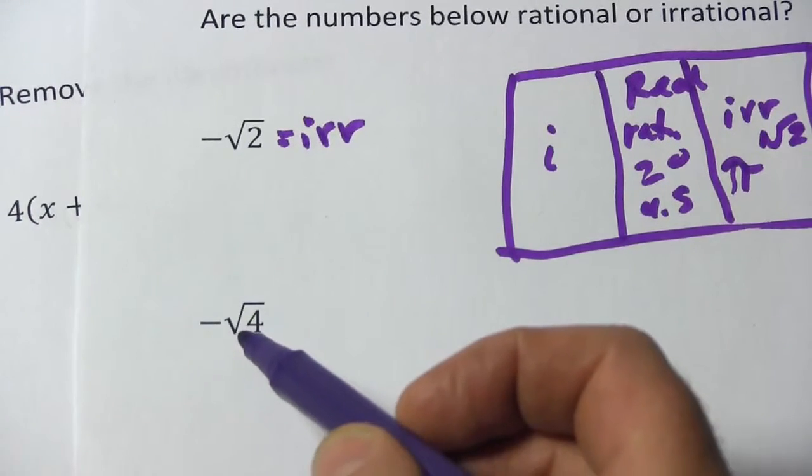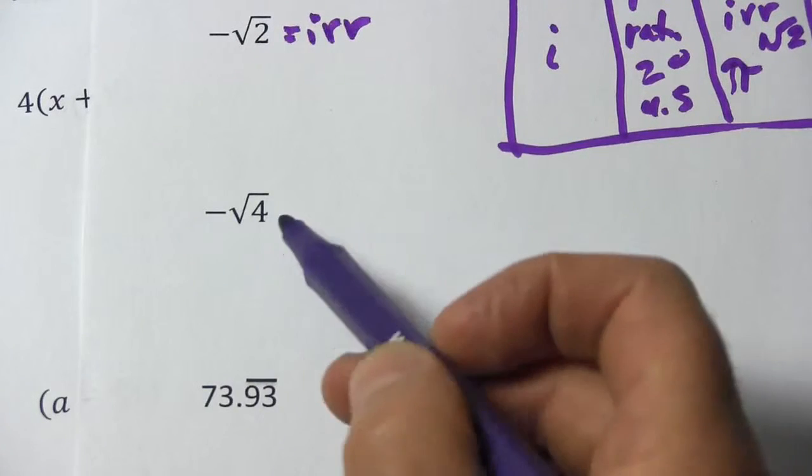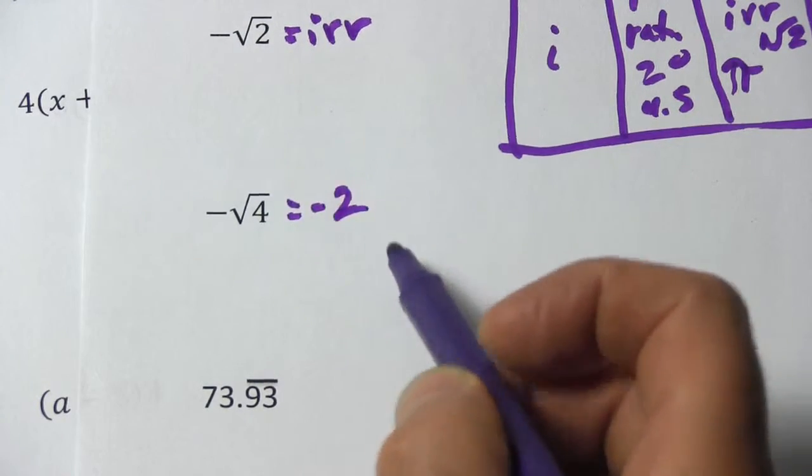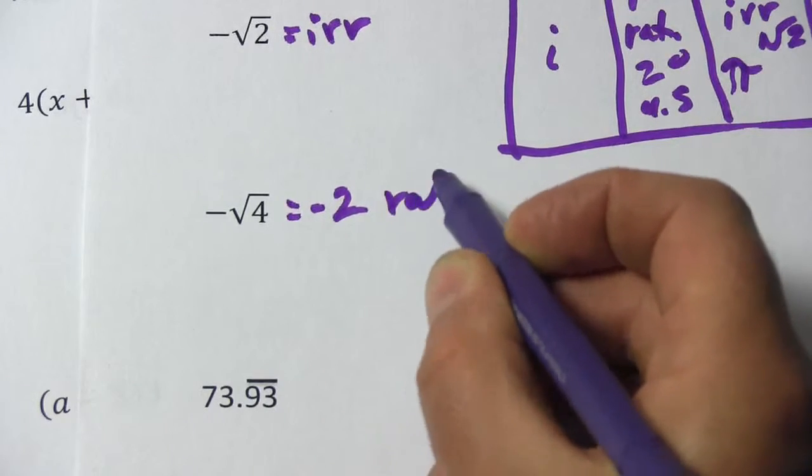Alright, and next we have the negative square root of 4. Well, you should know that the square root of 4 is 2, so this is actually just negative 2. That is a rational number.